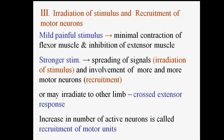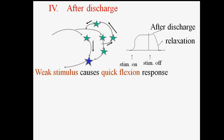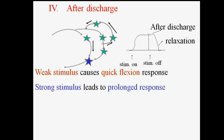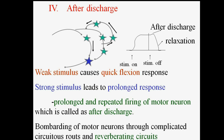The increase in number of active neurons is known as recruitment of motor neurons. For after discharge: a weak stimulus causes quick flexion of response, while a strong stimulus leads to a prolonged response. The prolonged and repeated firing of motor neurons is called after discharge, which is an important property of reflexes.